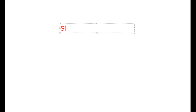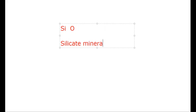For example, silicate minerals — silicon (Si) and oxygen are the most common elements on Earth's crust. Silicate minerals are made up of silicon and oxygen, along with other elements. These two elements are the most abundant on Earth's surface, so silicate minerals are found almost everywhere.